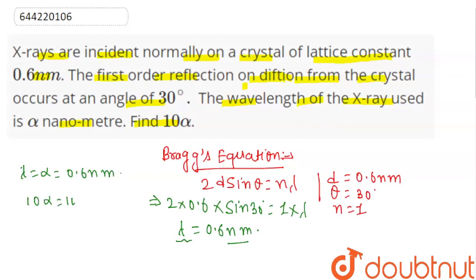10 alpha is equal to 10 into 0.6 nanometer, equals 6 nanometer. This is our answer, 10 alpha.